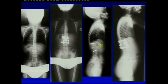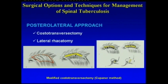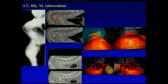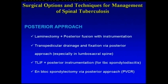You can see one level above and one level below instrumentation with anterior and posterior instrumentation together. The posterolateral approach via costotransversectomy can be used in patients with severe pulmonary compromise and sharp angular kyphosis with neurological deficit. We performed this costotransversectomy procedure at the apex of the kyphosis without instrumentation in a patient with very severe respiratory problems, spastic paraparesis, and sharp angular kyphosis.